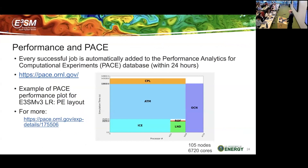A few words on performance: every simulation we do is automatically added to what we call the PACE database — Performance Analytics Computational Experiments. There's a lot of information for every simulation entered in PACE. One key output is a plot giving a visual summary of the relative cost of each component: the horizontal axis shows the number of processors used, and the vertical axis is the time it took for the simulation to run.